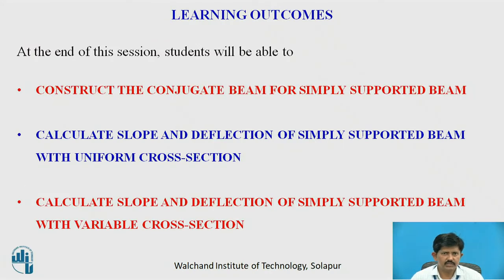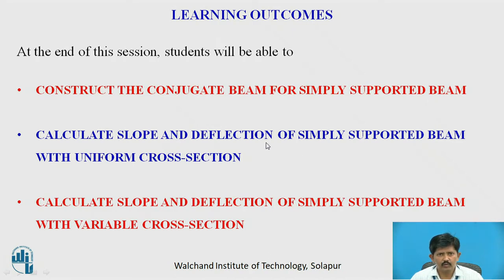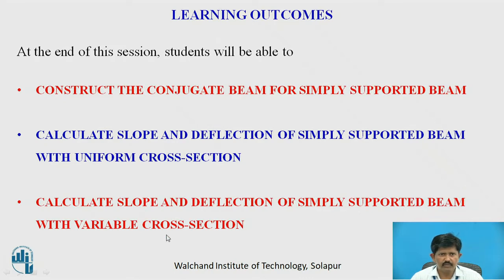At the end of this session, the students will be able to construct the conjugate beam for a simply supported beam. They will be able to calculate slope and deflection for a simply supported beam with uniform cross-section, and also for a simply supported beam with variable cross-section.